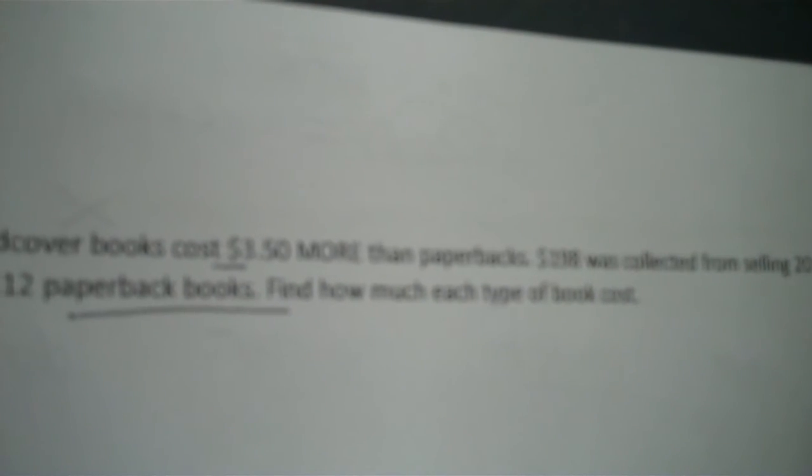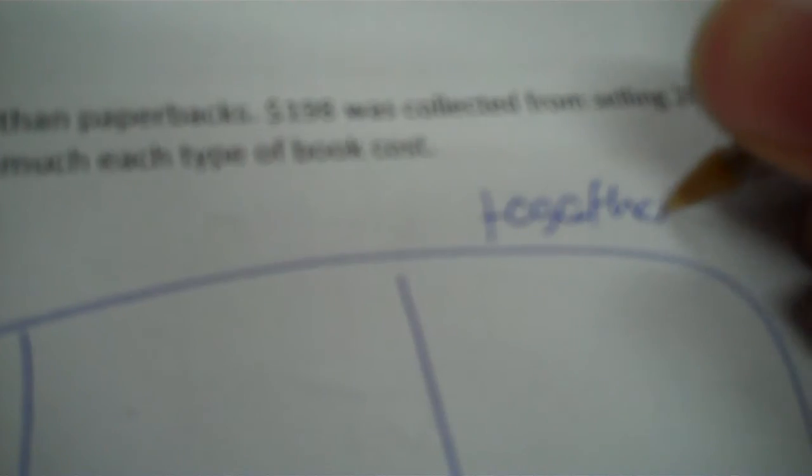Hardcover books cost $3.50 more than paperbacks. $198 was collected from selling 20 hardcover books and 12 paperback books. Find how much each type of book costs. 3 units. So together, how many units per unit total. So you get the hardcover and the paperbacks. So hardcover, paperbacks. And then the cost, money total, cost per unit.